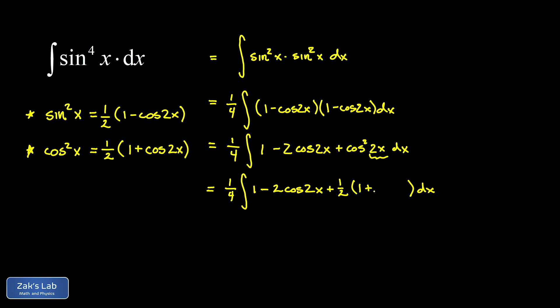When we apply that power reducing identity to cosine squared 2x, we get one half times one plus cosine of twice the angle, which is now a cosine of 4x. We're going to distribute that one half to both of those terms. The first one of those terms gives me a one half. I can combine that with the one out in front to get three halves.